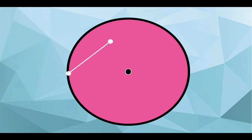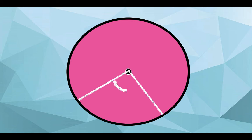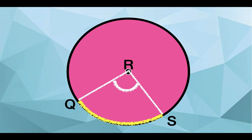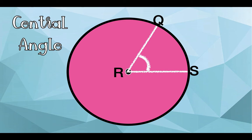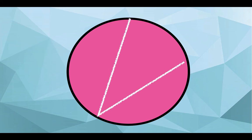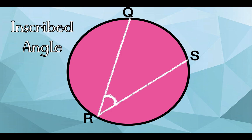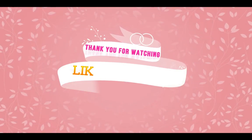How about this? Good job. This is what we call chord. How about this one? What do you call the curved line between point Q and S? Good job. This is an arc. How about this? What kind of angle do we have here? Very good. This is the central angle. How about this one? What kind of angle do you see? Good job. This is what we call inscribed angle.